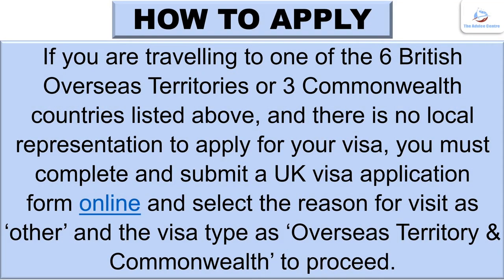How to Apply: If you are travelling to one of the six British Overseas Territories or two Commonwealth Countries listed above, and there is no local representation to apply for your visa, you must complete and submit a UK visa application form online and select the reason for visit as 'other' and the visa type as 'Overseas Territory and Commonwealth' to proceed.